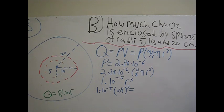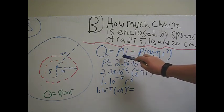Part B asks, how much charge is enclosed by spheres of radii 5, 10, and 20 centimeters? To do this, we use this formula where charge equals ρ times V.